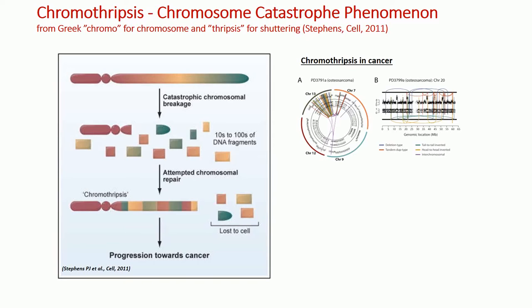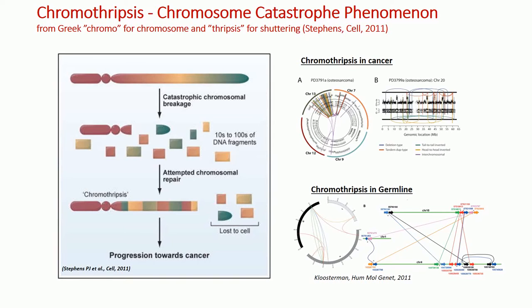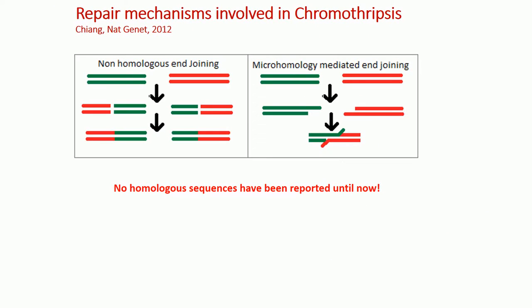Chromotripsis was first characterized in cancer, but soon after it was also detected in congenital and developmental disorders, giving rise to the term germline chromotripsis. The breakpoint junction sequence features of previously described, relatively balanced chromotripsis cases suggest that the multiple double strand breaks are joined together by non-homologous end-joining or micro-homology mediated end-joining repair mechanisms. Until now, no homologous sequences had been reported, suggesting that non-allelic homologous recombination is rather excluded from chromotripsis.